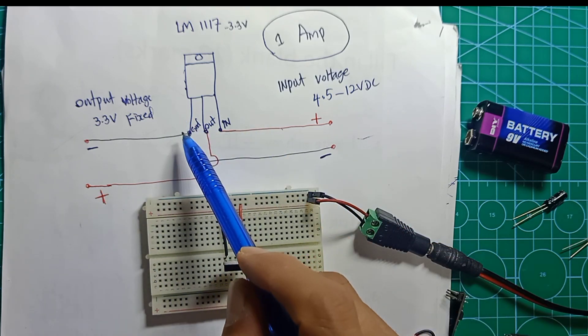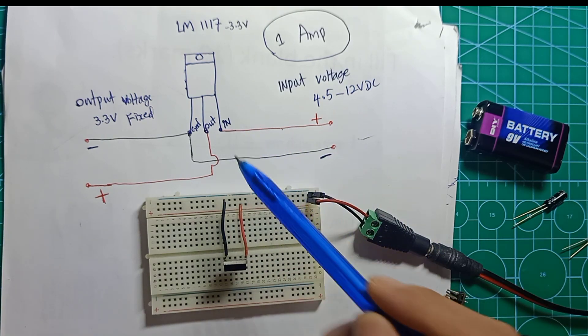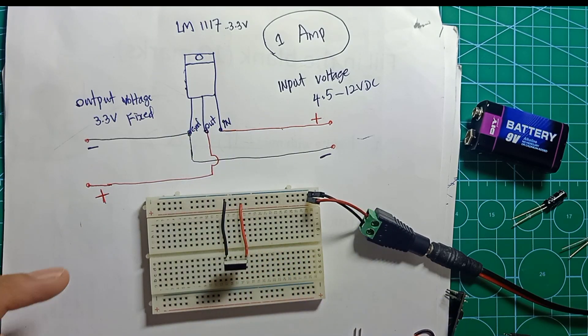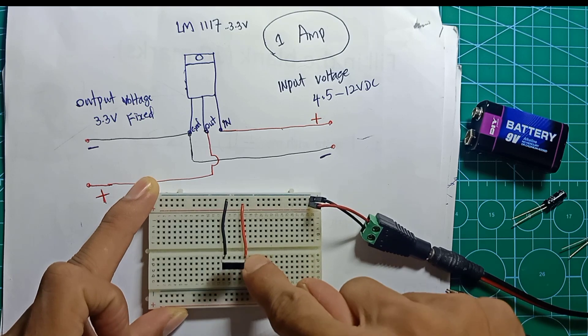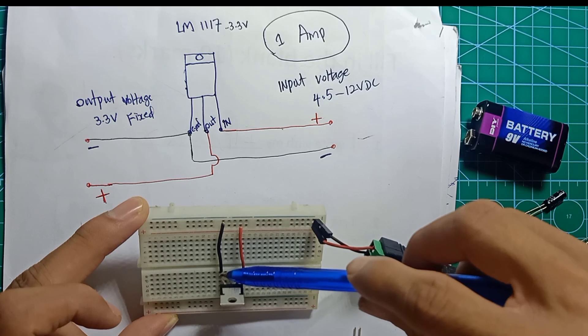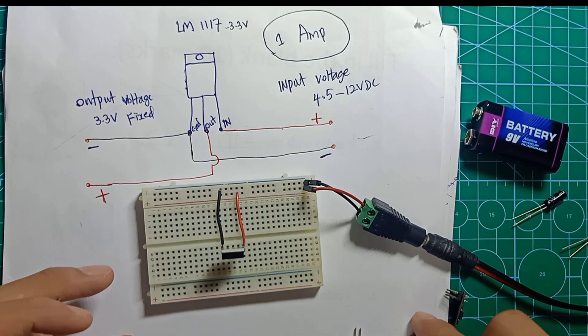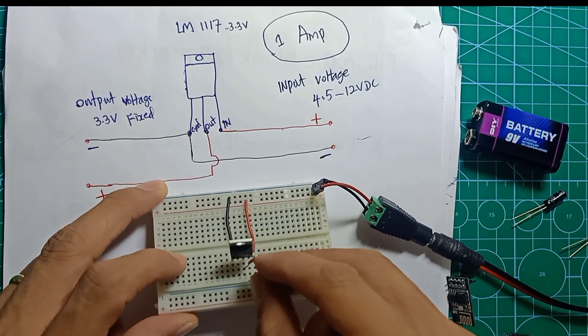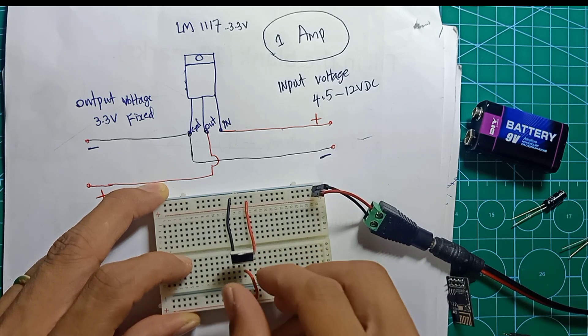The 12 positive goes to the first pin of the LM1117. And 12 negative goes to the third pin. This is pin 1, pin 2, pin 3. The positive pin goes to this side here, and negative pin goes to this side here. The input is already complete, and the output is in the middle - the output I will place right here.